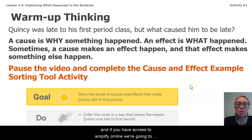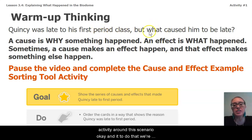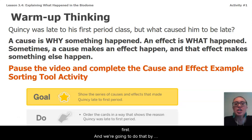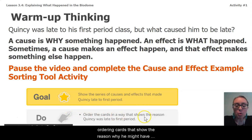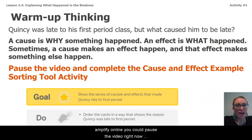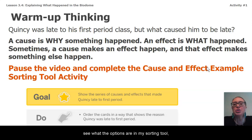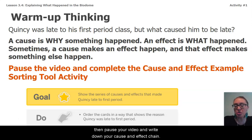We're going to pause the video. If you have access to Amplify online, we're going to complete the cause and effect example sorting tool activity around this scenario. We're going to show the series of causes and effects that made Quincy late to first period — what happened to cause something else, to then cause Quincy to be late. We'll do that by ordering cards. If you don't have access to Amplify online, you could pause the video right now and write out a sequence of events that would cause someone to be late to first period, or you can follow along with me and then pause to write down your cause and effect chain.